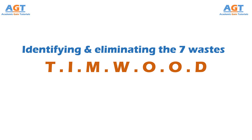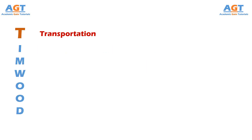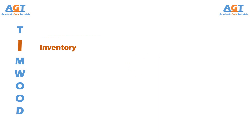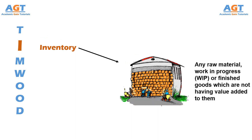The first letter T stands for transportation, which means the unnecessary movement of parts between processes. The letter I stands for inventory, which includes any raw materials, work in progress, or finished goods which are being stored in the warehouse but not having any value added to them.